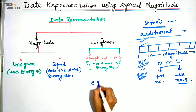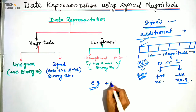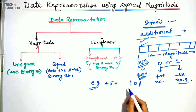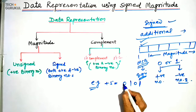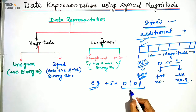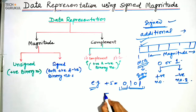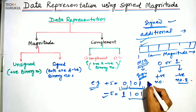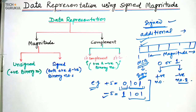Suppose we want to represent plus 5 in signed numbers. The binary equivalent is 101, and we place a 0 bit to represent the positive sign. These are the magnitude bits and this is the sign bit. Similarly, for minus 5, 101 is the equivalent and we place 1 to represent the minus sign. This is the way how we represent signed numbers.